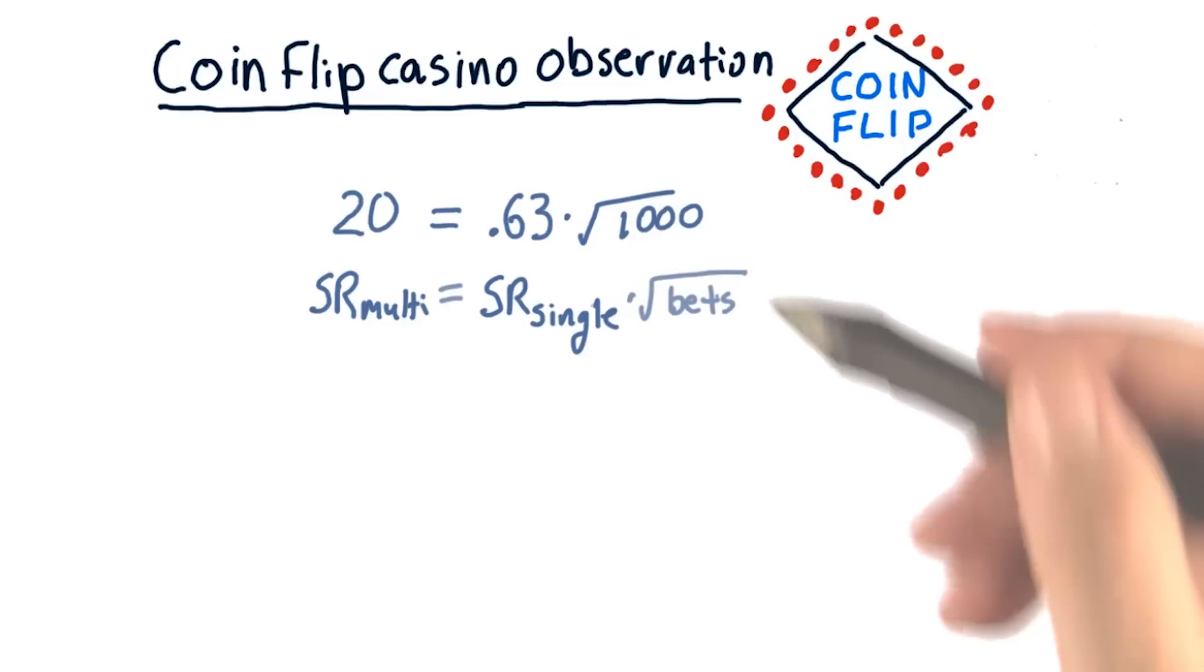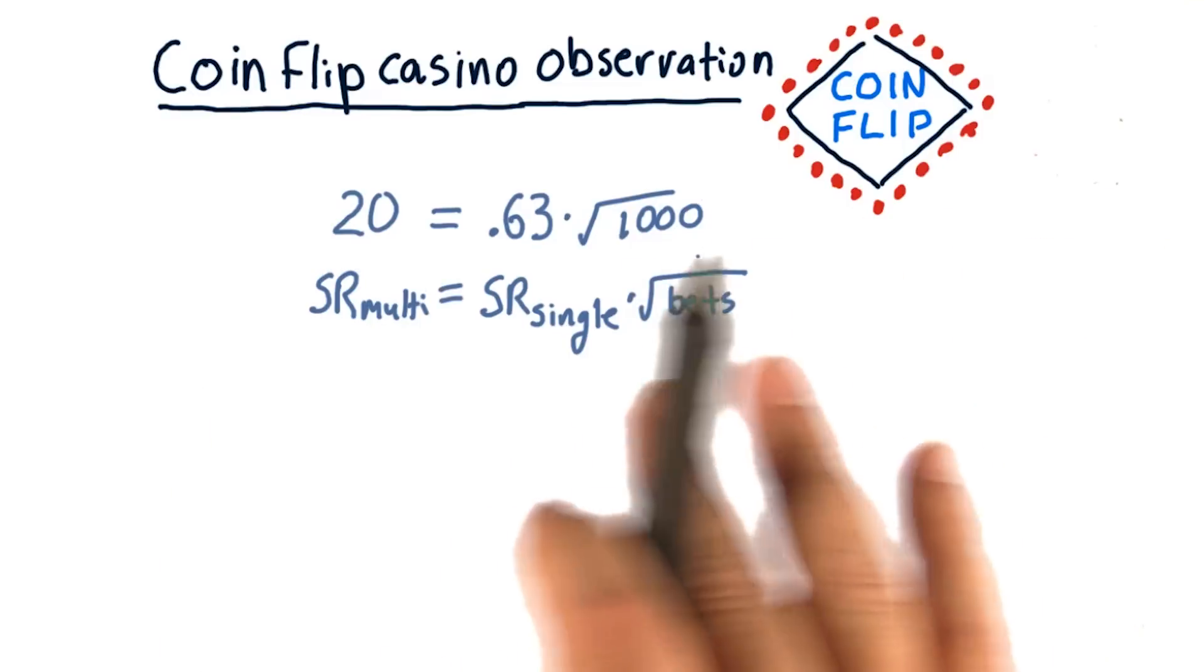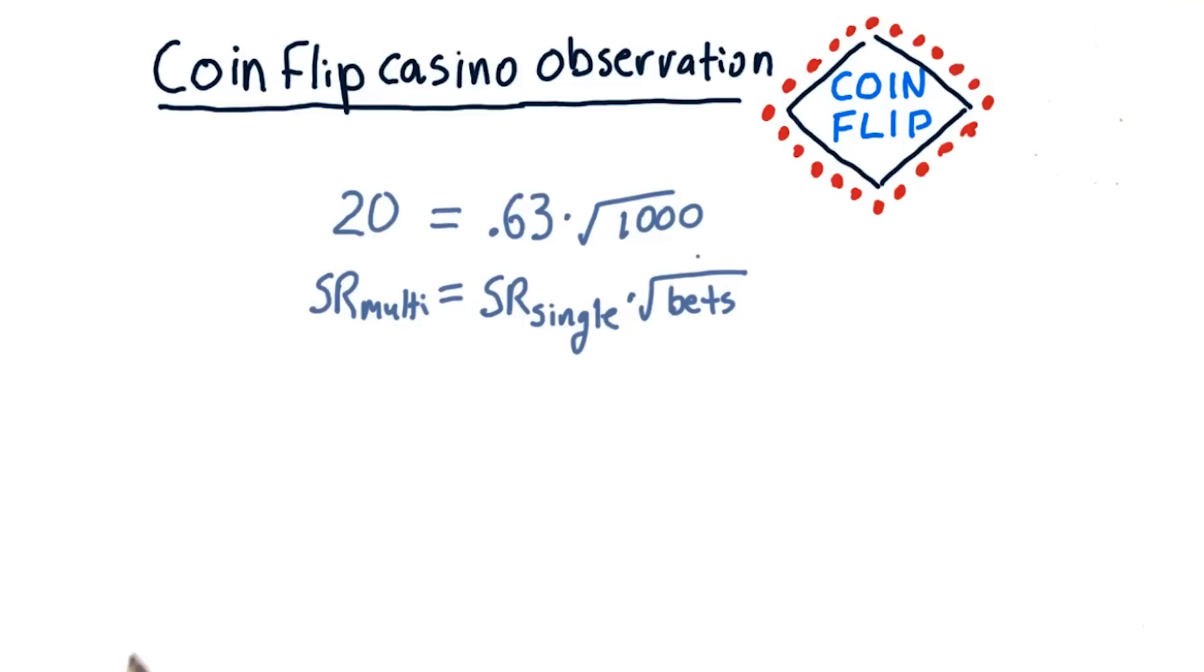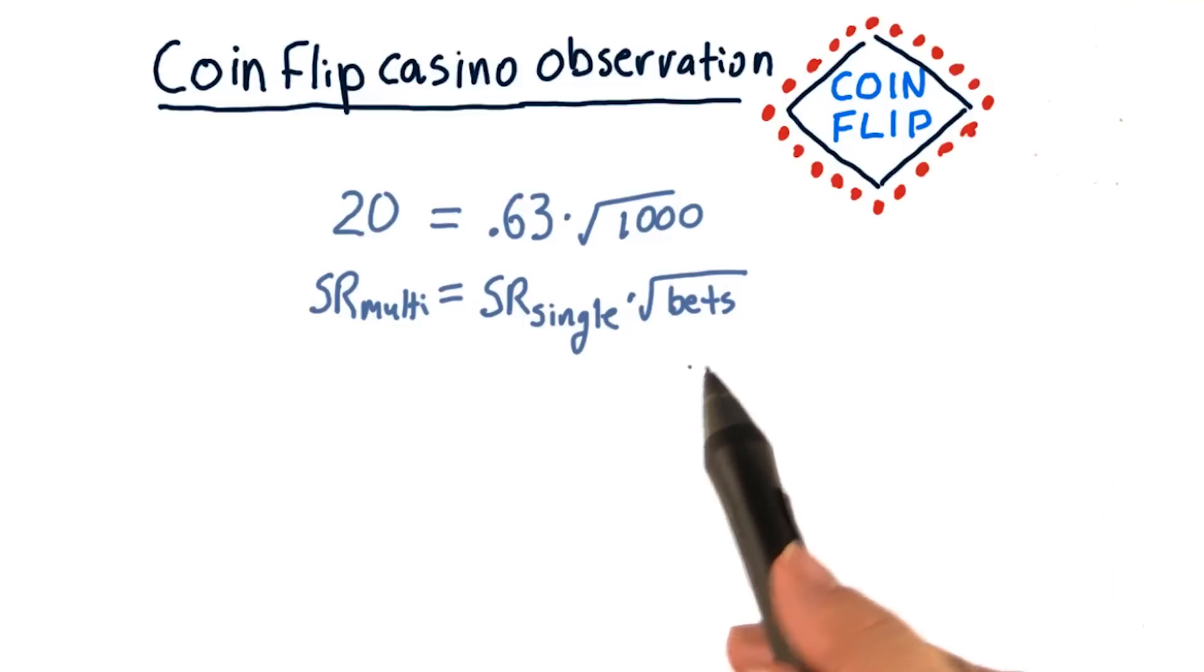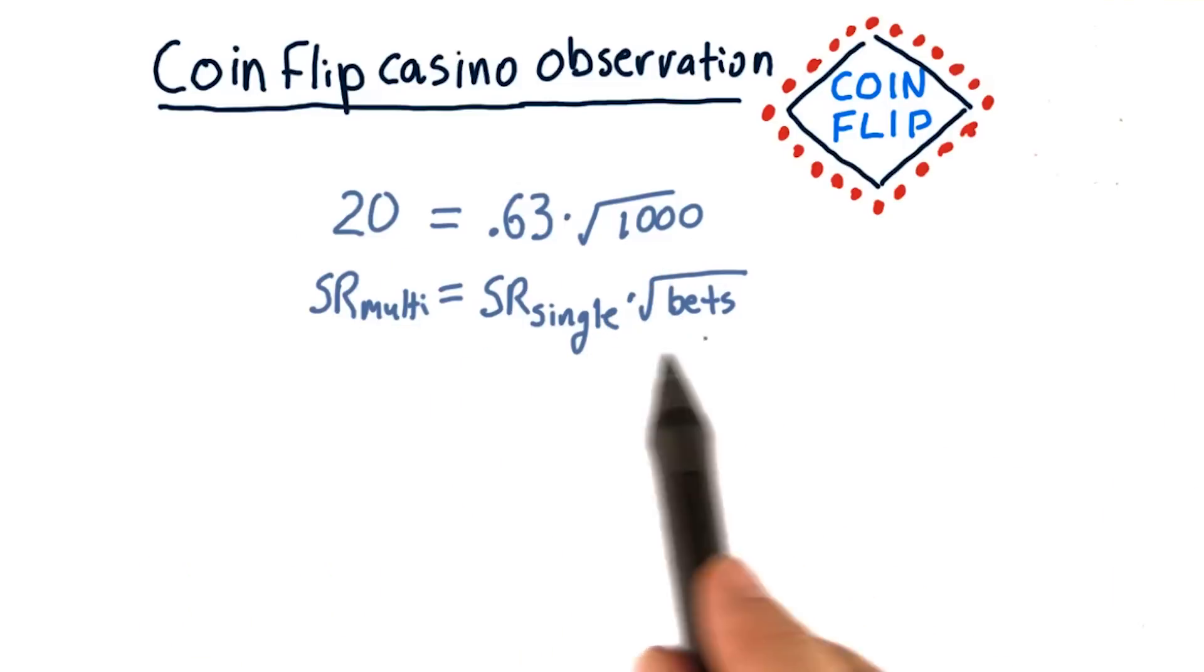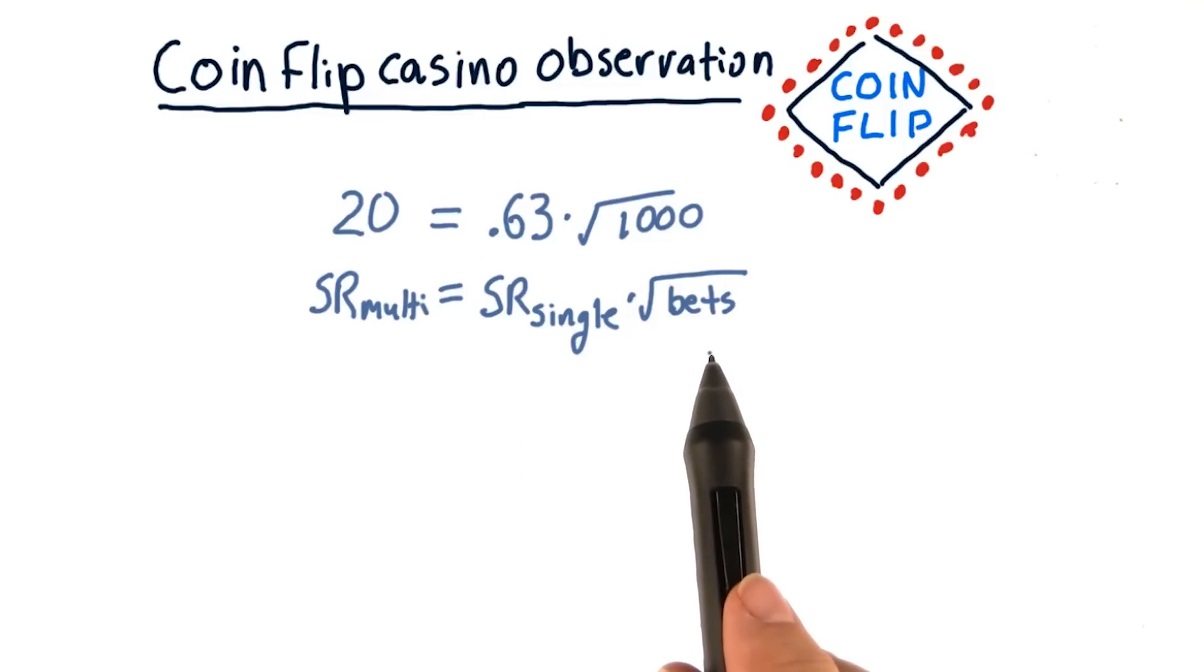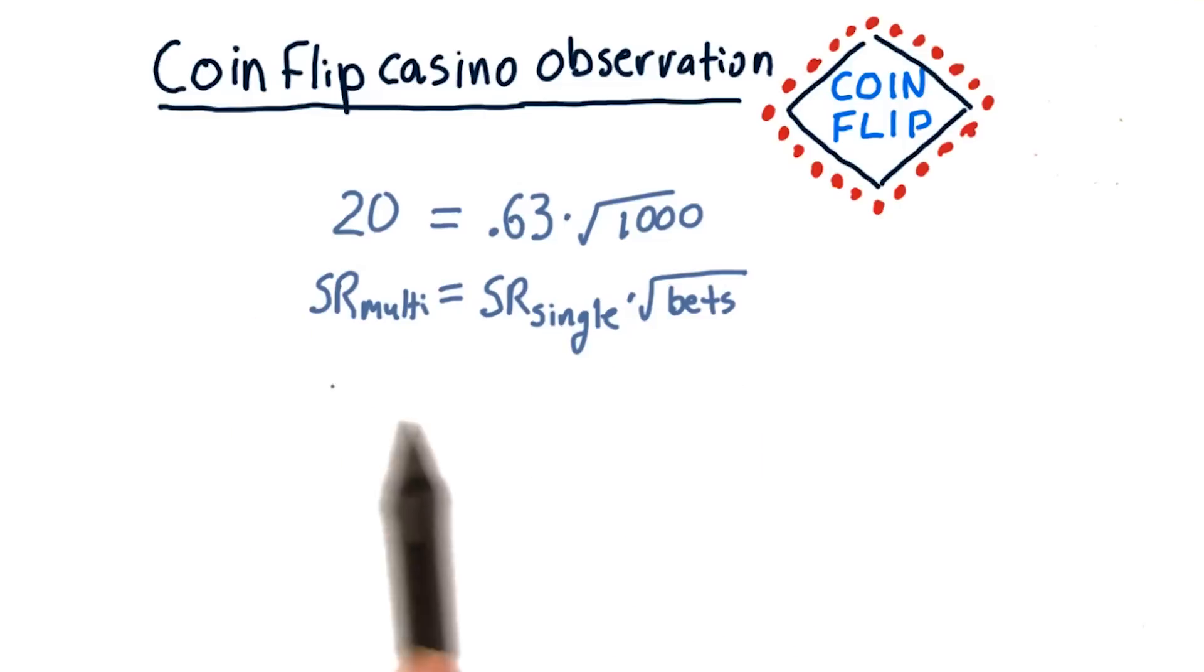So isn't that curious? It turns out that in general, if you carry this scenario out to more examples, if you split your bets evenly across multiple tables, this relationship will hold.